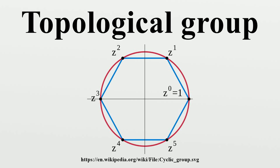A semi-topological group is a group G with a topology such that for each c in G the two functions G to G defined by a to ac and a to ca are continuous. A quasi-topological group is a semi-topological group in which the function mapping elements to their inverses is also continuous.